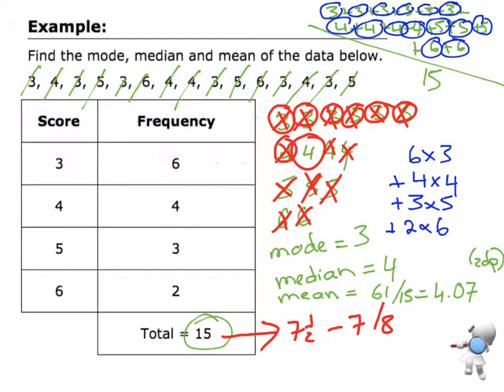So what I'm essentially doing is, I am taking the score of three and multiplying that by its frequency plus the score of four times its frequency plus the score of five times its frequency plus the score of six times its frequency. And that's going to give me 61. So if I do all that, that gives me 61. Then I divide by the 15 and I get my mean.